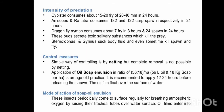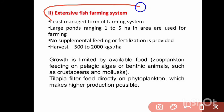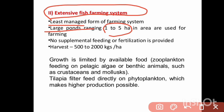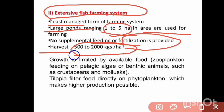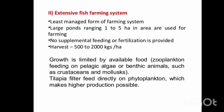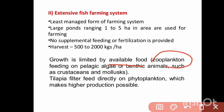Next is extensive fish farming — this is the least managed fish farming system. Large ponds ranging from 1 hectare to 5 hectares are used. No supplemental feeding or fertilization is provided. Harvest is 500 to 2000 kg per hectare. Growth is limited by the available food, such as zooplankton feeding on phytoplankton and benthic animals such as crustaceans and mollusks.